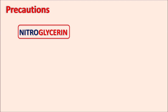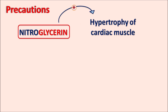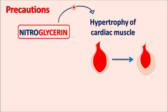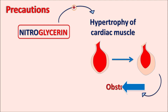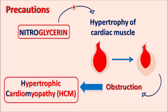Another important precaution of nitroglycerin is that this drug can increase the hypertrophy of cardiac muscle. The ventricular muscle may be thickened, reducing the filling of blood. This results in decreased blood filling of ventricles and increased obstruction within the blood flow, which may lead to precipitation of hypertrophic cardiomyopathy, commonly known as HCM. In this condition, the blood flow from the heart is reduced, and there is obstruction in blood flow within the ventricles, which may further increase the angina attack in the patients. So even though nitroglycerin reduces angina, whenever it increases the hypertrophy of cardiac muscle, it may further increase angina because of obstruction of the blood flow.